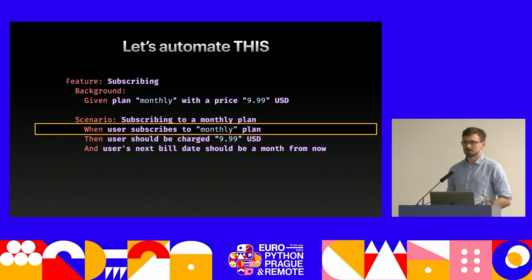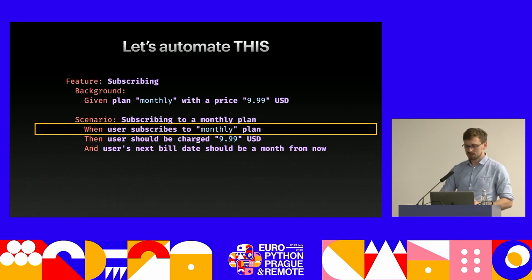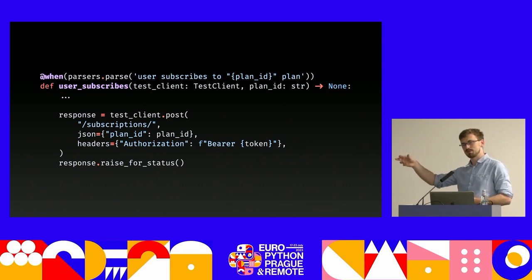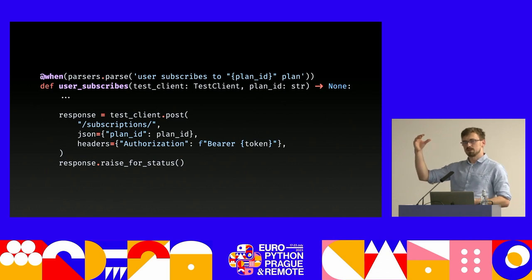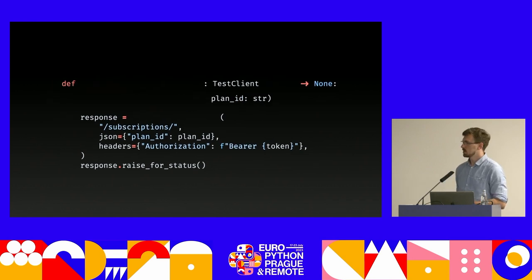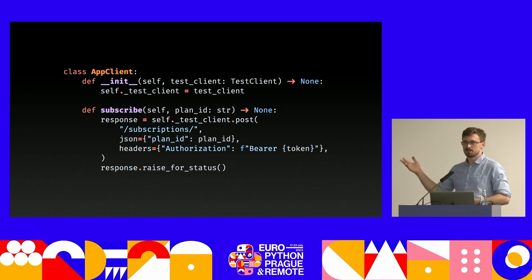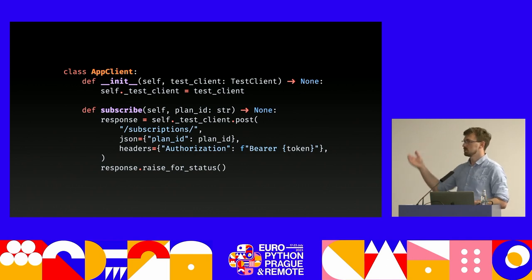From experience, the API level should be considered first for automating BDD — though of course you can go up or down depending on your case. My default is to start with the API. Now let's do some coding. We're automating the simplified scenario: a user subscribes to a monthly plan. At the API level we'll have many HTTP requests using a test client, for example FastAPI's. The first thing to do to make this manageable is to abstract away the protocol.